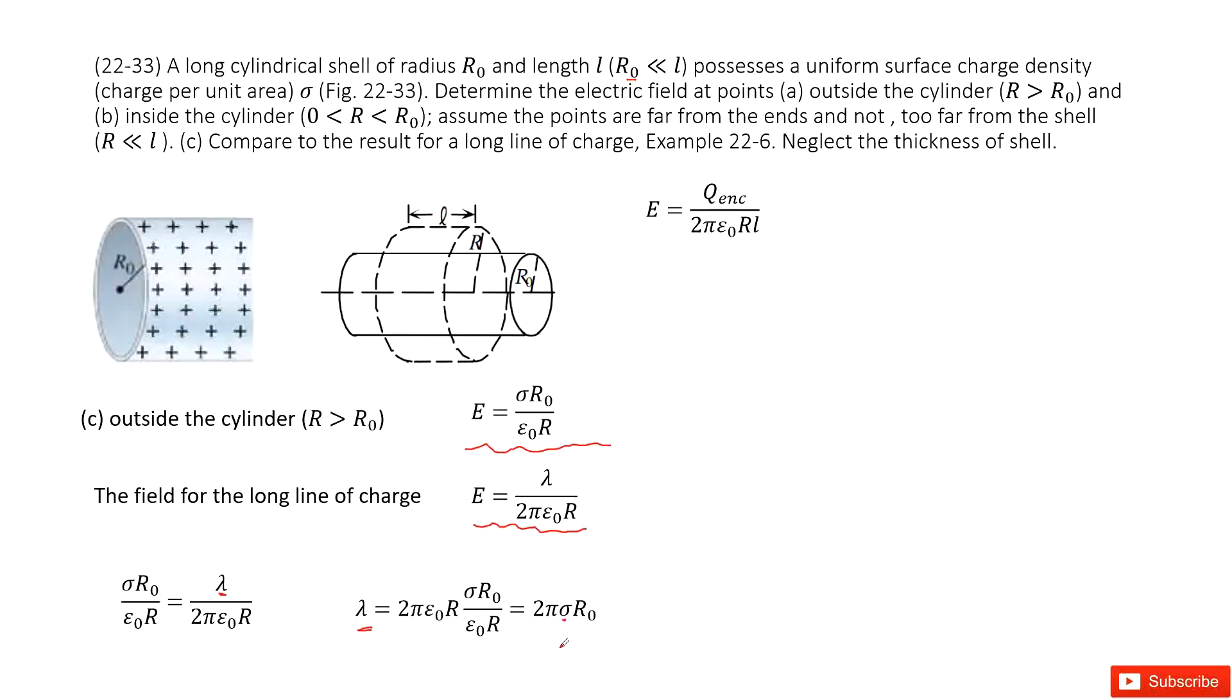You can see σ is the surface charge density. 2πR₀ is the length for this circle. And if we consider this is a long line of charge, the L can be considered as 1. So the linear charge density equals the surface charge density times 2πR₀. Thank you.